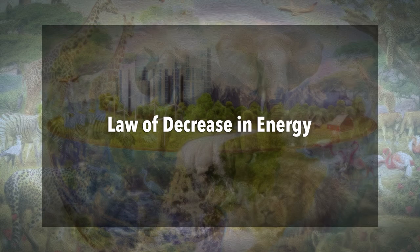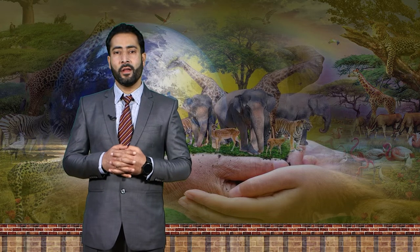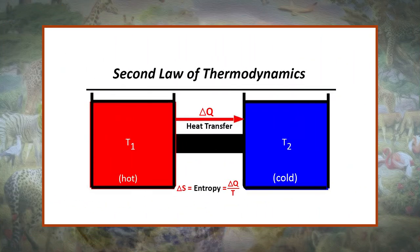The second law is the law of decrease in energy. The second law of thermodynamics states that on the transformation of energy from one kind to another, there is an increase in entropy and a decrease in the amount of useful energy. For example, when coal is burned in a boiler to produce steam, some of the energy creates steam that performs work, but part of the energy is dispersed as heat to the surrounding air.